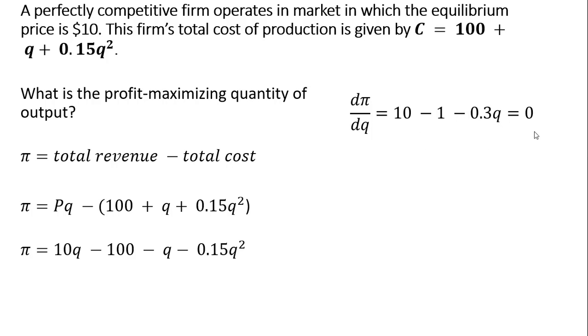We set this result equal to 0 because we're interested in maximizing profit, and now we're going to just solve this equation for Q. So 10 minus 1 is 9. Moving minus 0.3Q to the other side, and now dividing through by 0.3, the profit maximizing quantity here is 30 units of output.